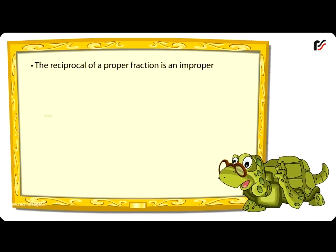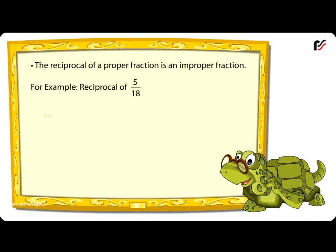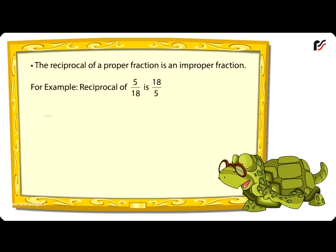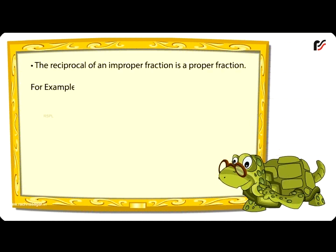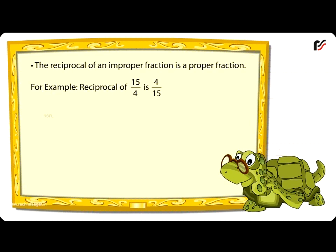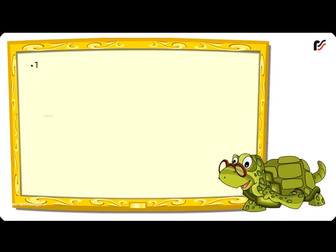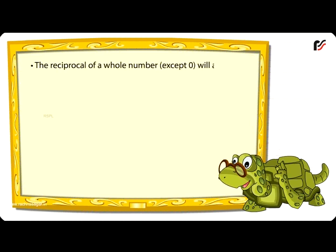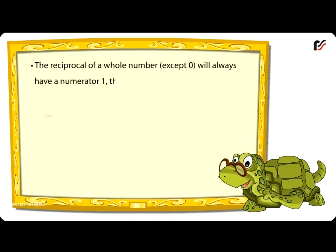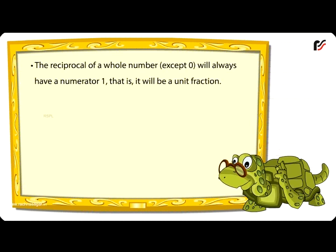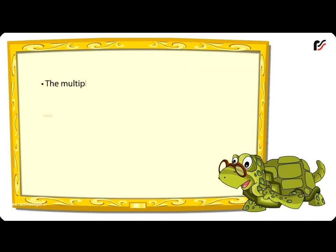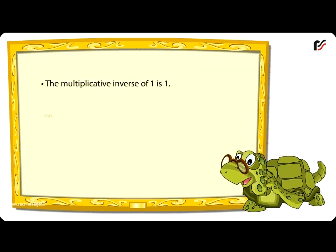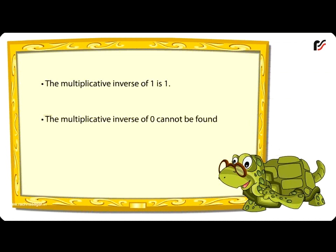Important facts about reciprocals. The reciprocal of a proper fraction is an improper fraction — for example, the reciprocal of 5 by 18 is 18 by 5. The reciprocal of an improper fraction is a proper fraction — for example, the reciprocal of 15 by 4 is 4 by 15. The reciprocal of a whole number (except 0) always has a numerator of 1, making it a unit fraction — for example, the reciprocal of 90 is 1 by 90. The multiplicative inverse of 1 is 1. The multiplicative inverse of 0 cannot be found.